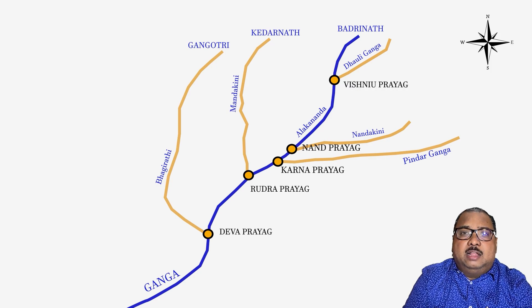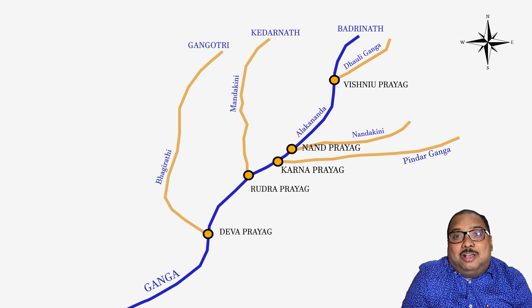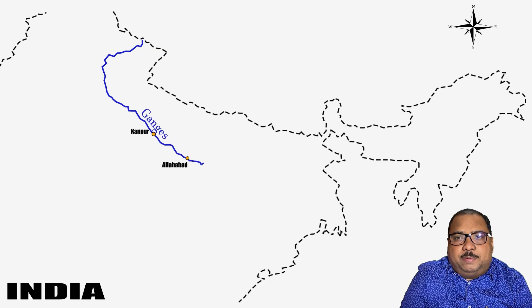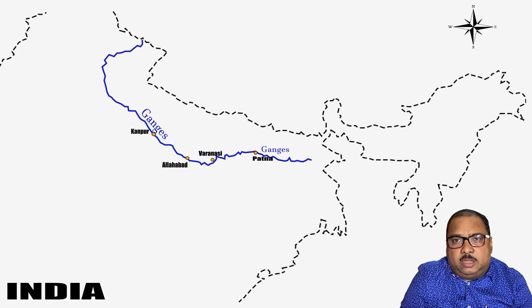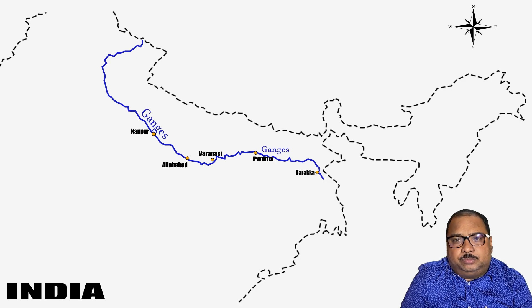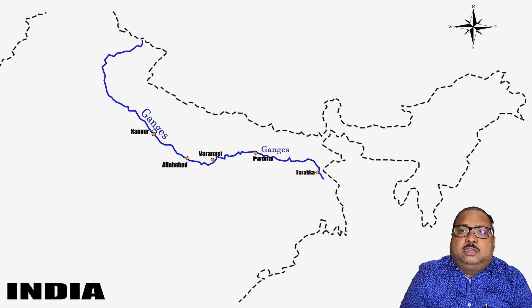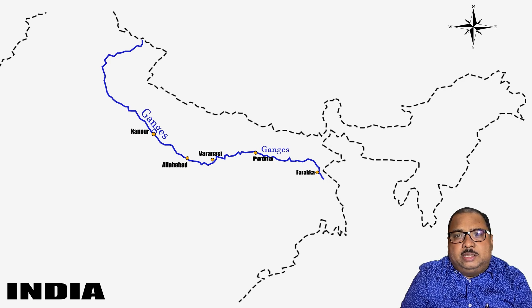The combined stream of Ganga starts its journey from Devaprayag. At Haridwar, Ganga leaves its mountainous course and enters the plain land of Northern India. When Ganga leaves Haridwar in Uttarakhand, it enters the state of Uttar Pradesh. At a place called Kannauj in Uttar Pradesh, the first tributary of Ganga meets it — a left bank tributary called Ram Ganga.